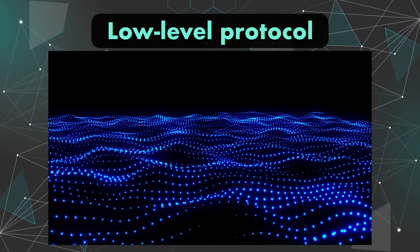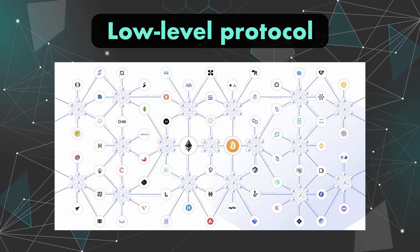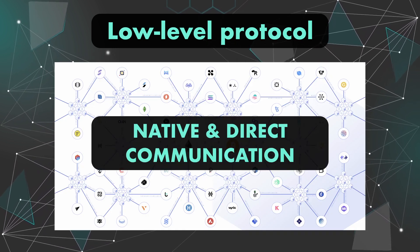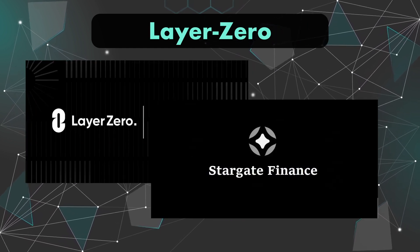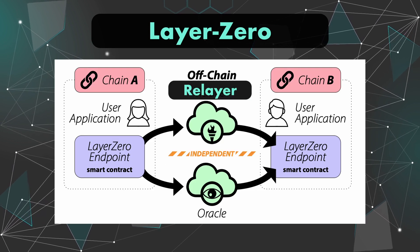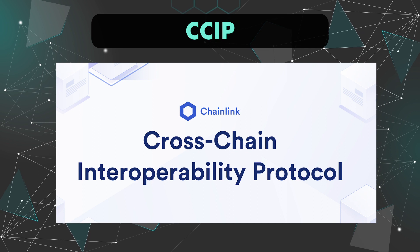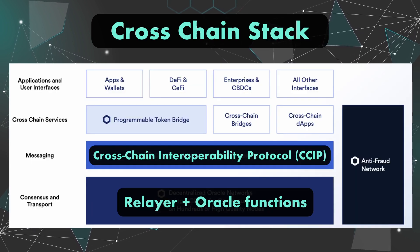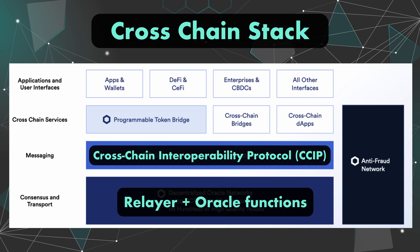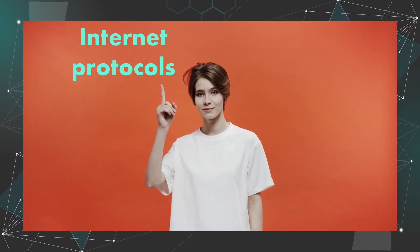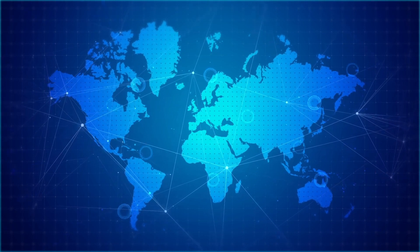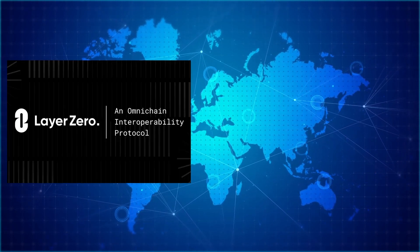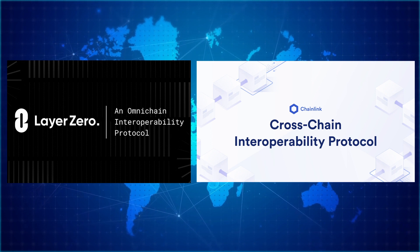Lastly, we've got the more recent low-level messaging approach, in which the protocol provides native and direct communication between different blockchains. For example, we've got the Layer Zero protocol, used by Stargate Finance — those guys use a combination of independent and off-chain relayers and oracles. CCIP from Chainlink is another one, kind of similar to Layer Zero, but relayers and oracles are not independent. What we are experiencing in Web3 today is similar to what happened in the early stage of the internet — protocols needed to be built for all the intranets to communicate together, and protocols like Layer Zero and CCIP are paving the way in that direction.